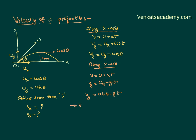So if I want to calculate velocity at any instant, say v bar, I will simply say vx i cap and vy j cap. Vx is u cos theta i cap. Vy is u sin theta minus gt j cap. So at any instant...